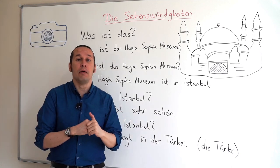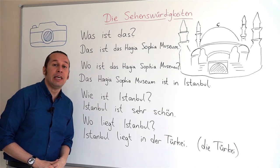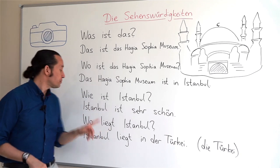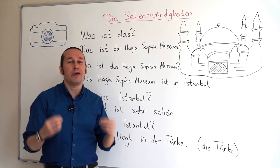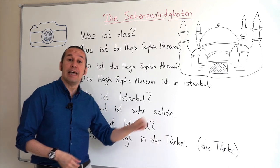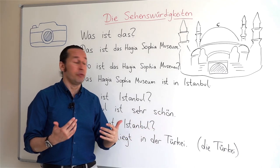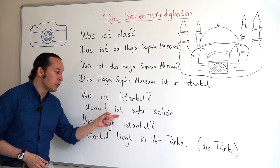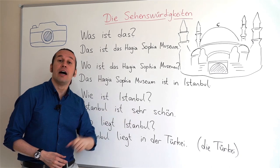If I say 'how is Istanbul?', in German 'how' is 'wie' — wie ist Istanbul? Istanbul is very beautiful. 'Beautiful' stands for 'schön', and 'very beautiful' is 'sehr schön'. So Istanbul ist sehr schön.